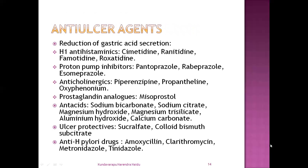And next: anti-ulcer agents. These are agents used to reduce and treat gastric ulcers. The first class is drugs which reduce gastric acid secretion, with subclasses: H2 antihistaminics — cimetidine, ranitidine, famotidine, and roxatidine; proton pump inhibitors — pantoprazole, aripiprazole, and esomeprazole; anticholinergic drugs — pirenzepine, propantheline, and oxyphenonium; and prostaglandin analogs — misoprostol.